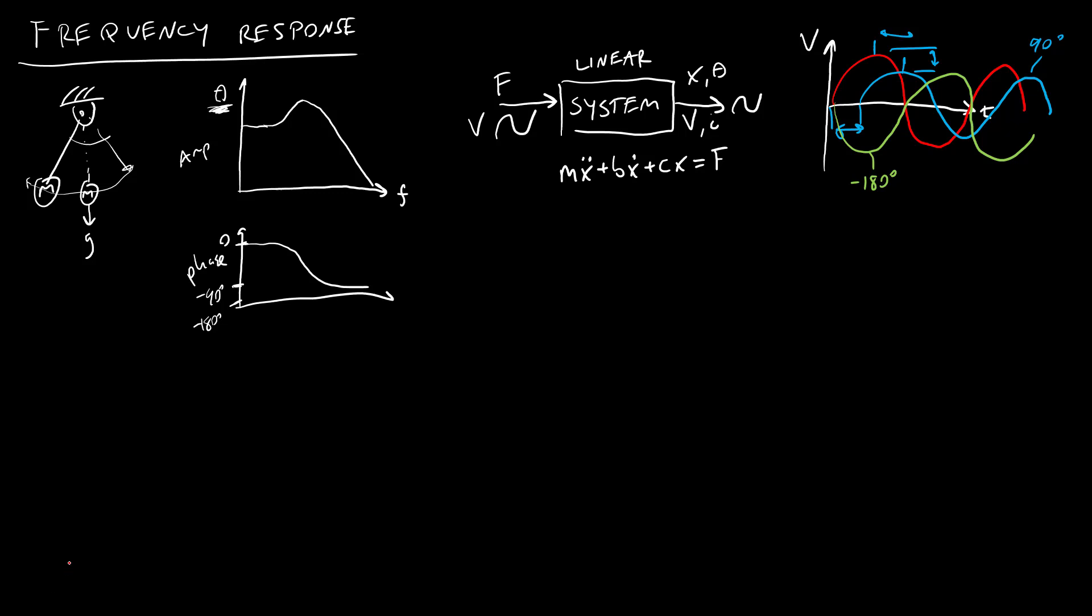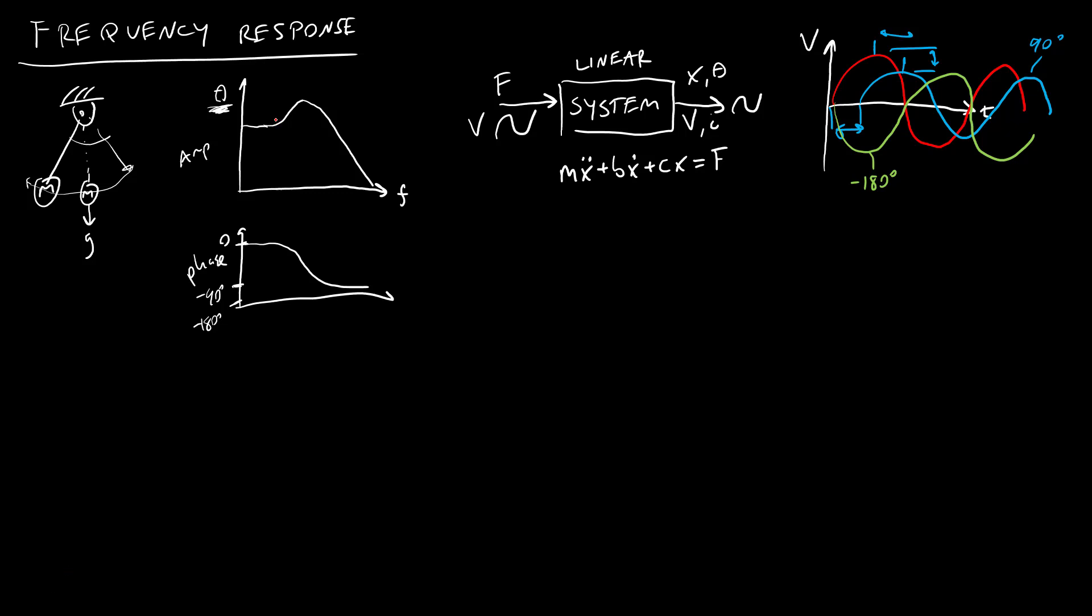Now, depending on how much friction or in an electrical system resistance there is, you might not have this resonant peak. A system could be what we call over-damped, where you don't get the peak and it just drops off like that, or it can be critically damped, which is right at the transition point where you start to get the resonant peak. That's something you'd learn more about in the system dynamics class.